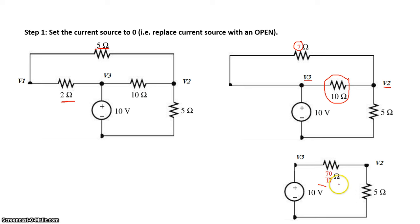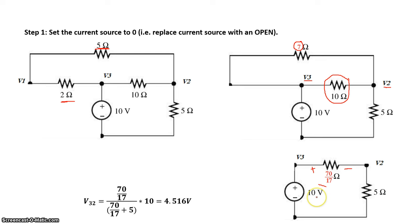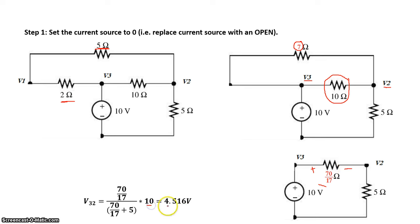Now we can find the voltage drop across this 70/17 ohm resistor using a voltage divider. V32 equals (70/17) divided by (70/17 plus 5), times the total voltage of 10 volts. So we get 4.516 volts between nodes 3 and 2.